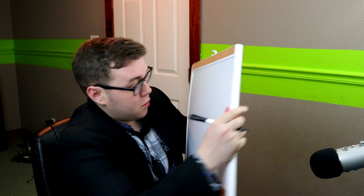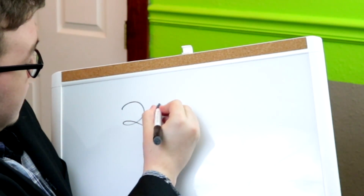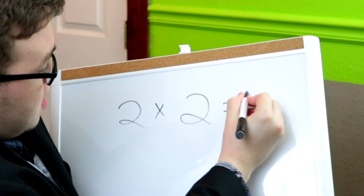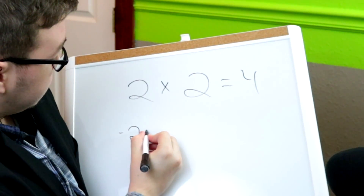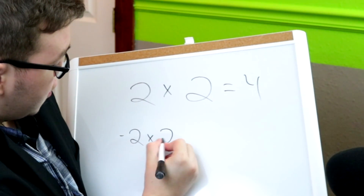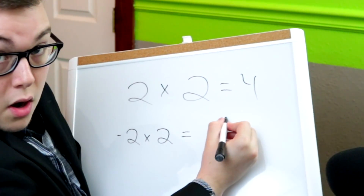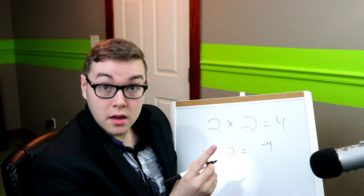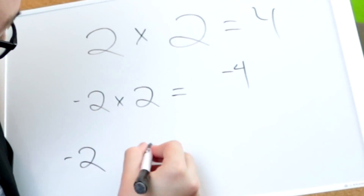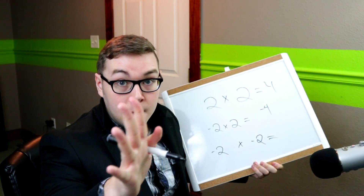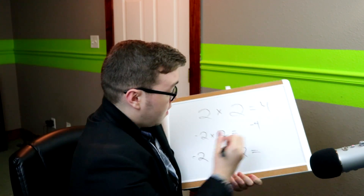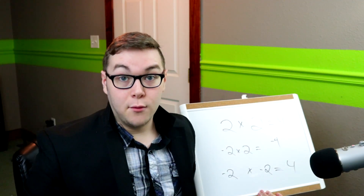I need you all to follow along with me. We have 2 times 2 — that's 4. Negative 2 times 2 equals negative 4, right? Negative 2 times negative 2 equals positive 4.